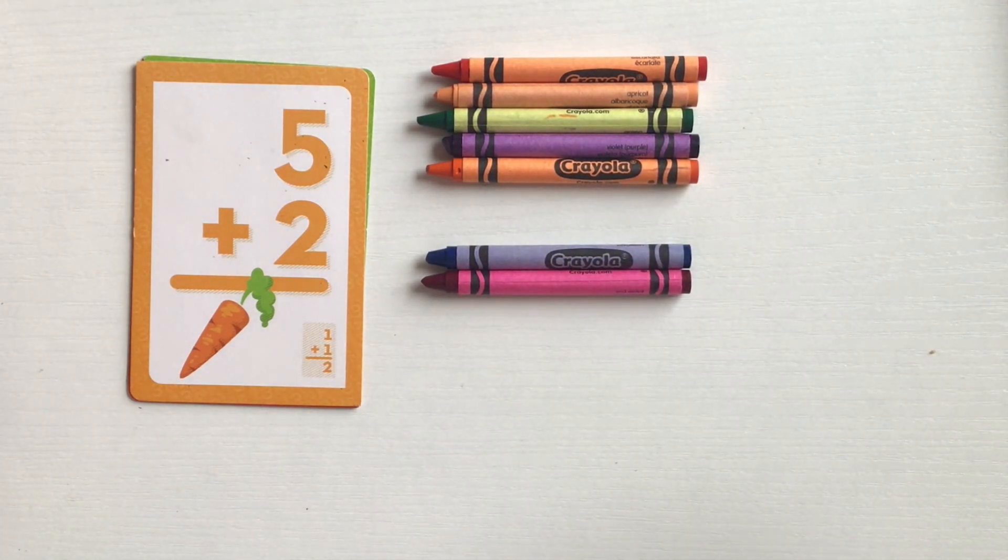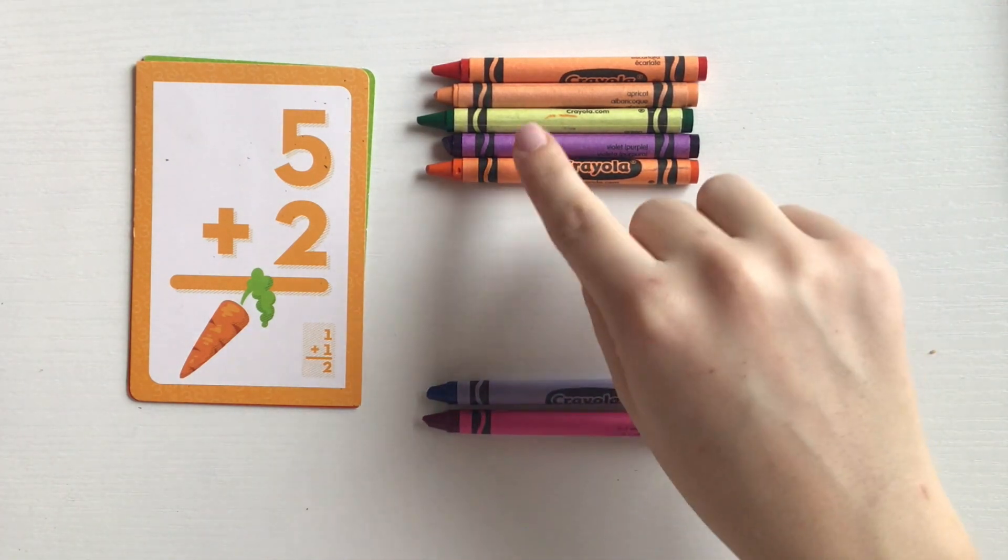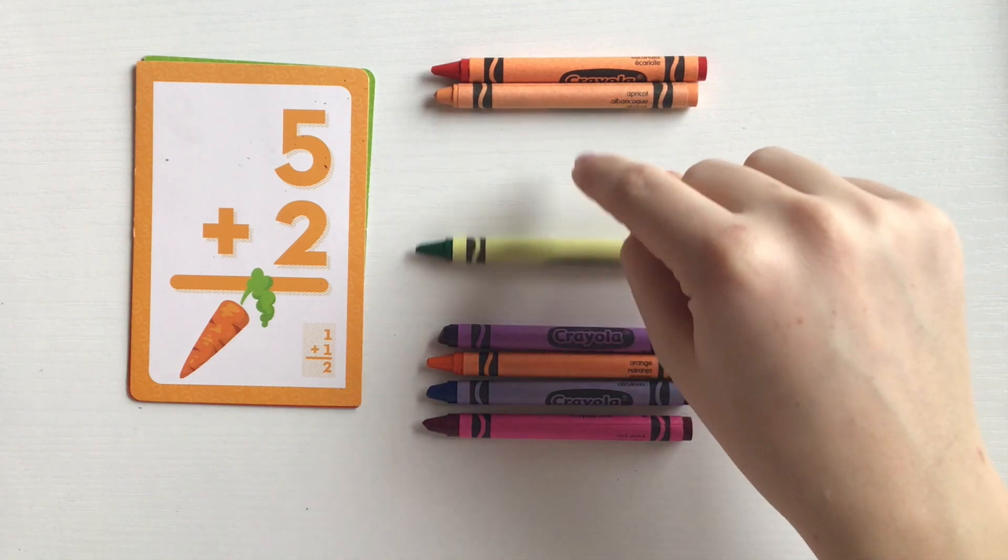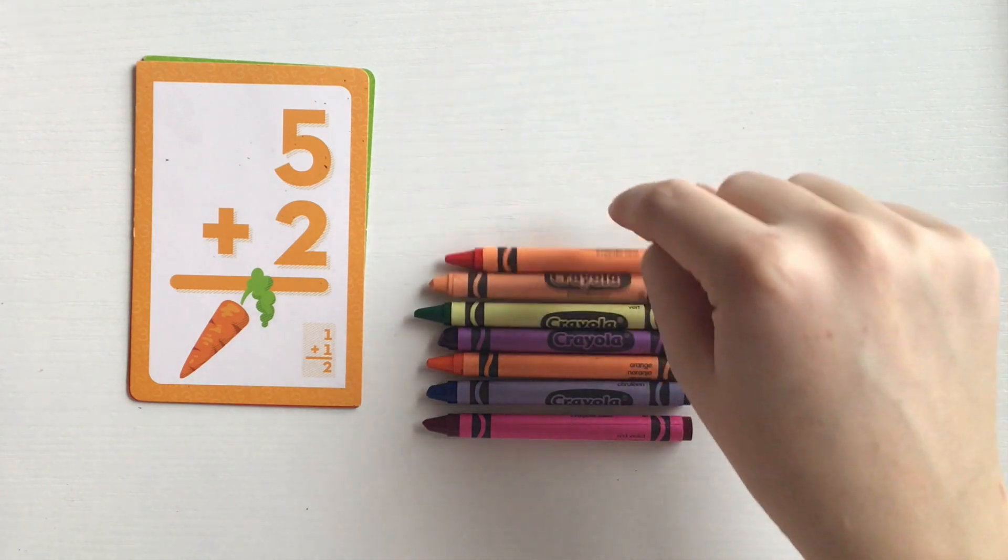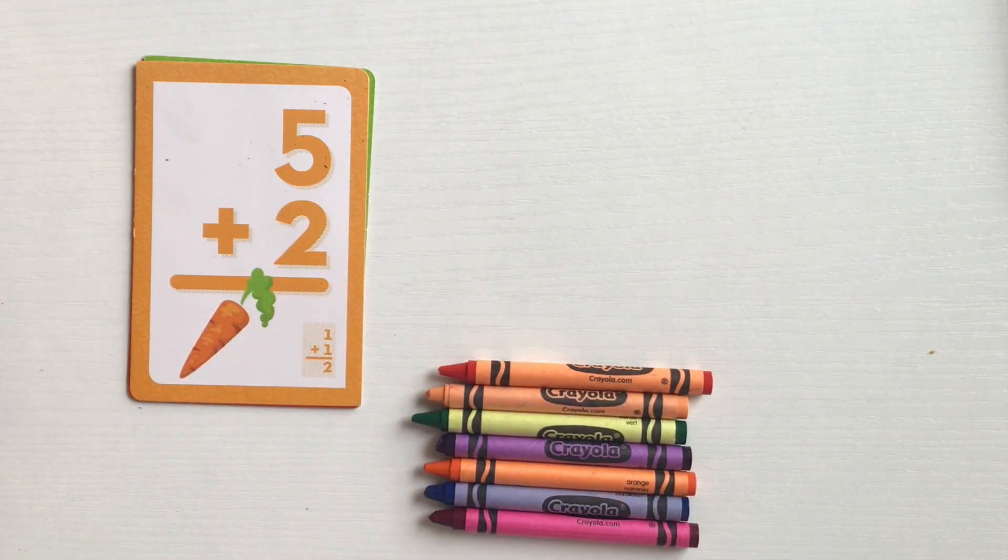Now I'm going to add them all together. One, two, three, four, five, six, seven. Five plus two equals seven.